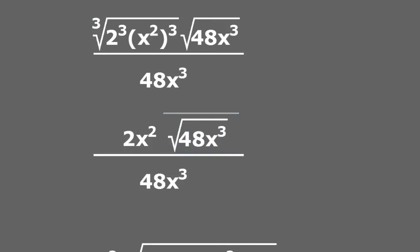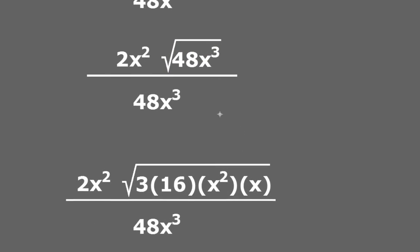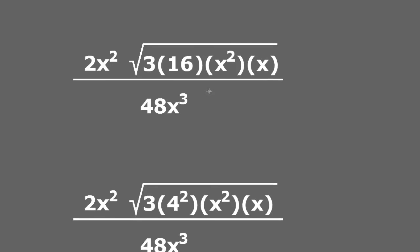Now I work on the square root of 48x cubed. 48 is the same thing as 3 times 16 — those are factors of 48. And x cubed can be rewritten as x squared multiplied by x, since x squared times x equals x cubed. For the next step, I am going to write 16 as 4 squared, since 4 times 4 equals 16. So now I have a 4 with an exponent 2 and a variable x with an exponent 2 inside of a square root.